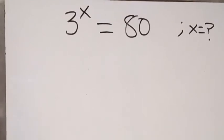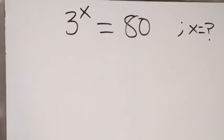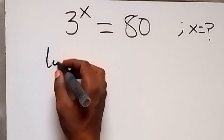Hello, you are welcome. How to solve this problem: 3 raised to power x equals 80. Here we are finding the value of x in this algebra problem. Let's take log of both sides, so we have log 3 raised to power x equals log 80.